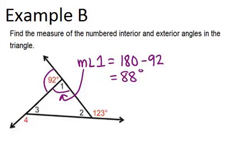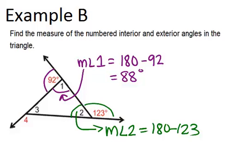For angle 2, angle 2 plus the 123 degree angle have to add up to 180 degrees, again because they form a linear pair. So the measure of angle 2 will be 180 minus 123, which is 57 degrees.